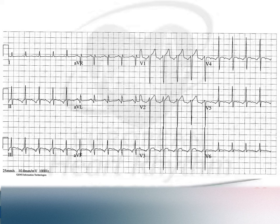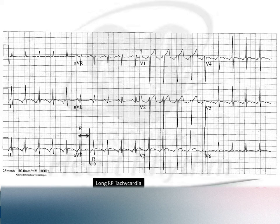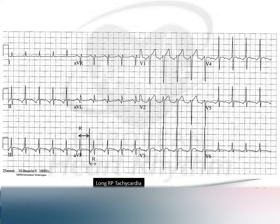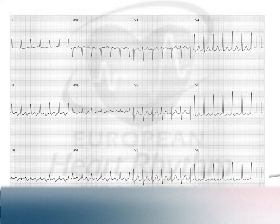When you have 1-to-1 P-wave-to-QRS conduction, you can't be as certain this is atrial tachycardia. This is a form of long RP tachycardia, where the RP interval is longer than the PR to the following QRS. Three mechanisms can cause this: atrial tachycardia, atypical AVNRT, and orthodromic AVRT with a slowly conducting retrograde accessory pathway. We need EP lab manoeuvres to differentiate focal atrial tachycardia from atypical AVNRT and AVRT.